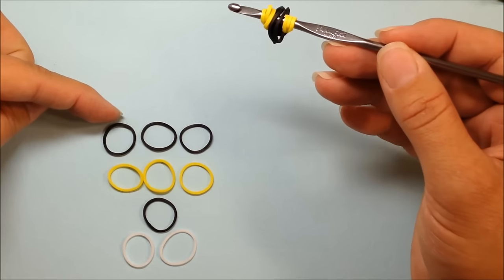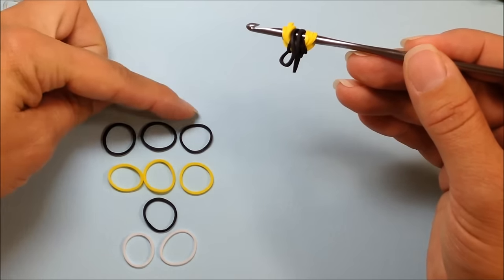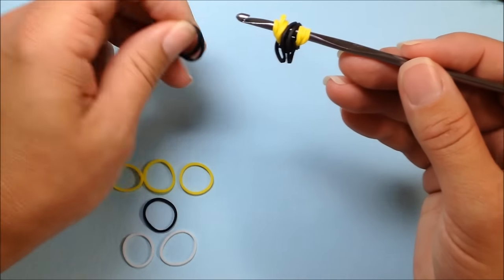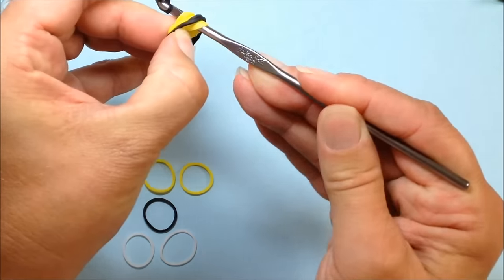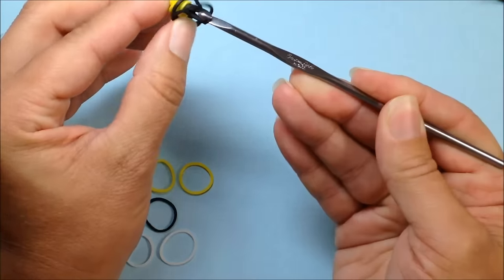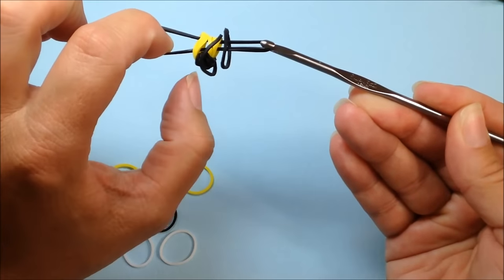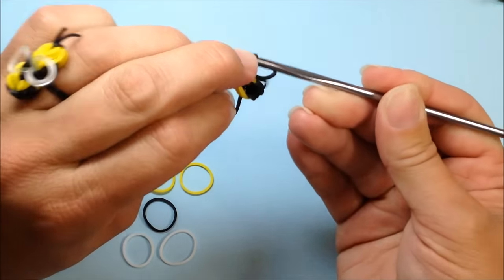Take three black bands. One, two, and three. And you're going to pull that through everything that you have on your hook. And reclaim.